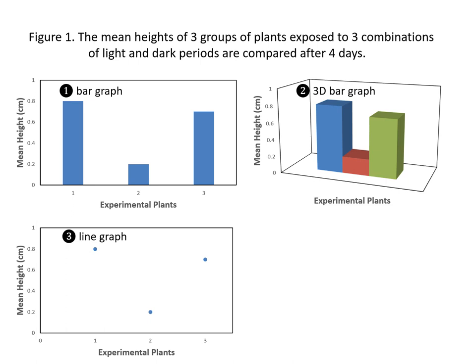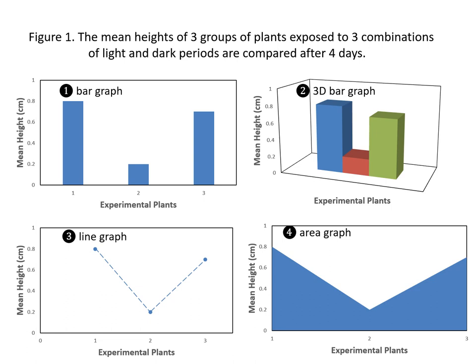The third graph is your line graph, showing the value of group one, group two, and group three connected with lines. I don't think this is advisable because there is really no relationship between groups one, two, and three. Had it been a measurement of a single group over time — between time one, time two, and time three — then the line graph would have been the most suitable. The fourth one is a specialized type called an area graph, which shows the value of something as it changes over time. Similarly, it's not applicable here because your groups one, two, and three are not related to each other.